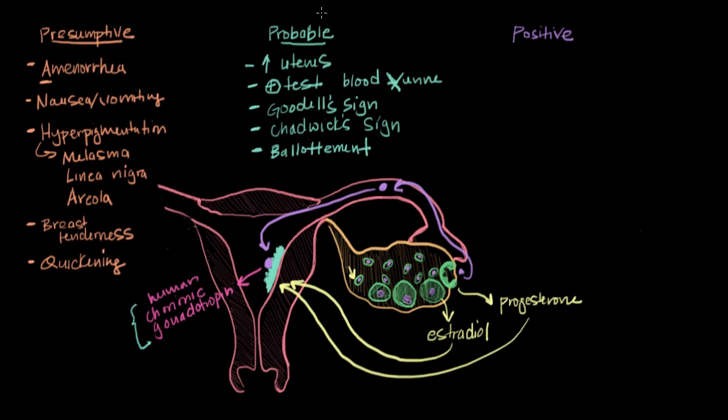So those are the probable signs of pregnancy, leaving us with the positive signs of pregnancy, which are signs that can only and only be explained by pregnancy. So they include visualizing the fetus, so direct visualization of the fetus either through ultrasound or x-ray. Also hearing fetal heart tones and feeling fetal movements. So visualizing the fetus, hearing the fetal heart tones, and feeling fetal movements are signs that are absolutely diagnostic of pregnancy. They can't be explained by anything else.